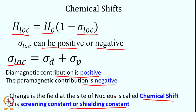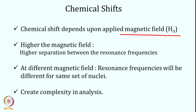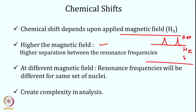The chemical shift depends upon the applied magnetic field H0. The higher the magnetic field, the higher the separation between resonance frequencies. For example, if we record a spectrum at 600 MHz versus 800 MHz, the separation between lines expressed in hertz will be larger at higher field. So higher magnetic fields are better for resolving spectra. However, this creates a problem when expressing resonance frequency in hertz, because at different magnetic fields the resonance frequencies differ for the same set of nuclei.